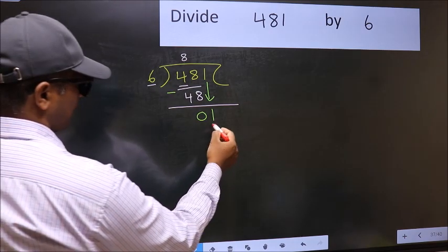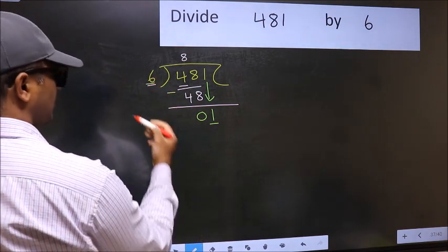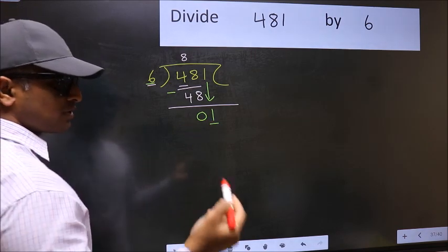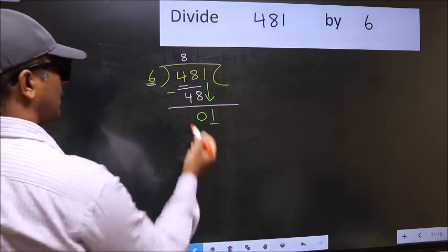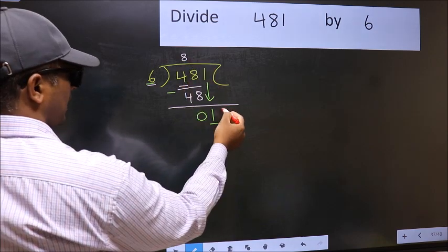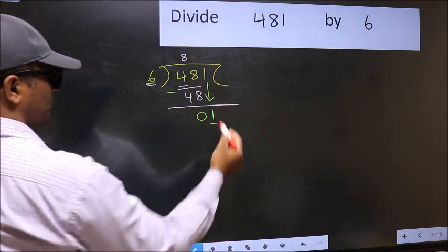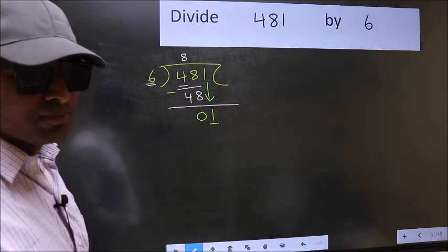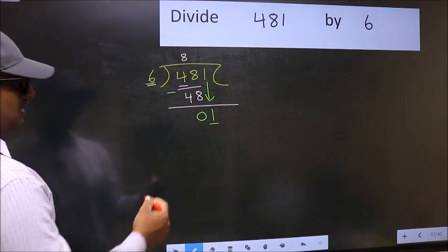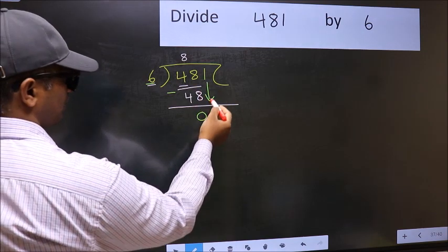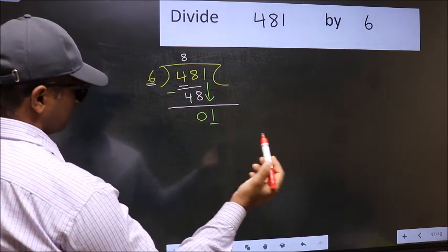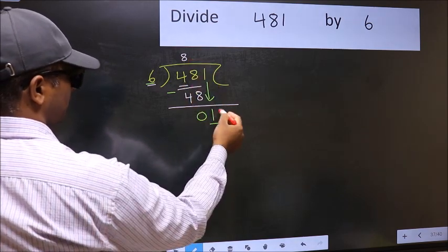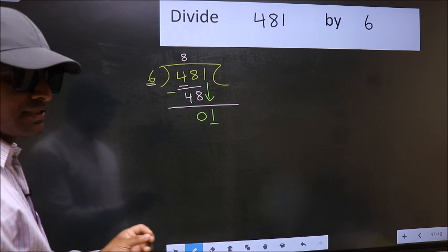Here we have 1 and here 6. 1 is smaller than 6. So what many do is they directly put dot and take 0, which is wrong. Why is it wrong? Because just now you brought this number down, and in the same step you want to put dot and take 0, which is wrong.